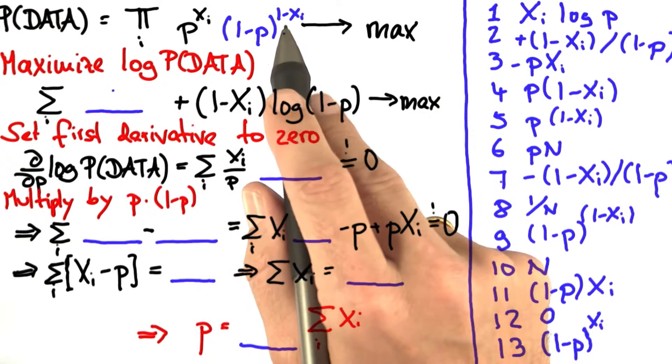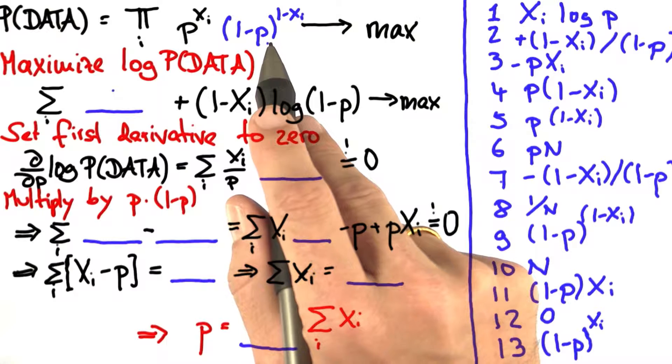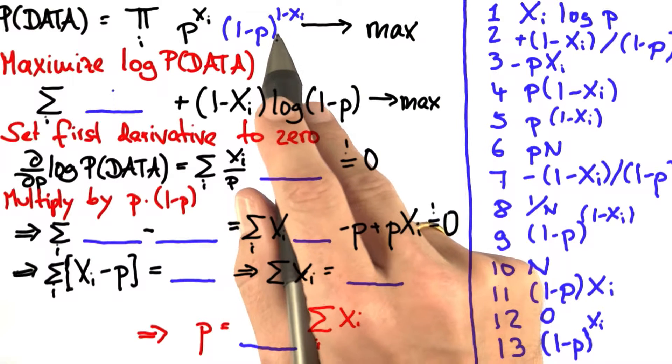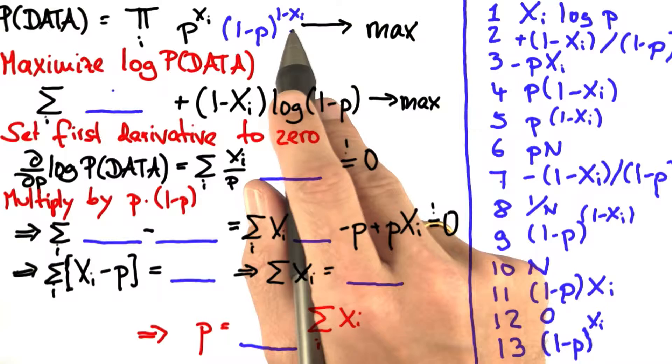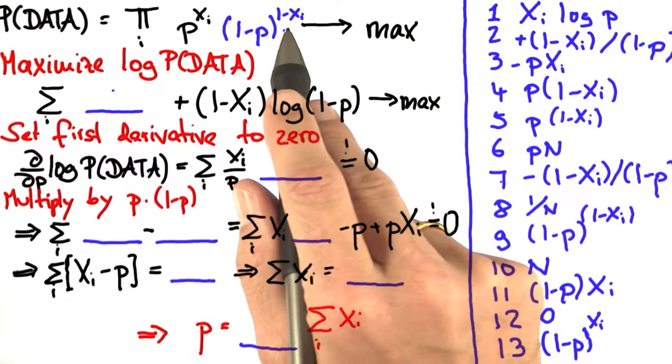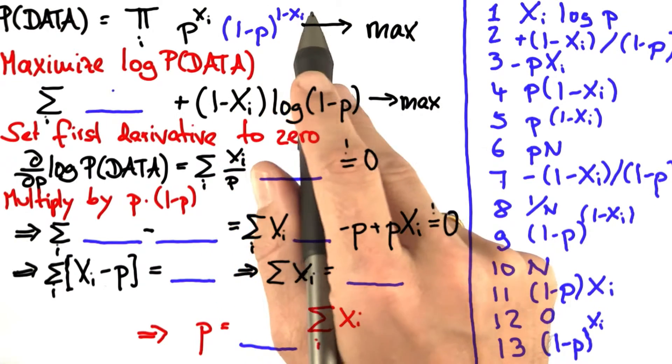This is exactly the inverse. You're going to multiply in 1 minus p for the tails probability whenever we see tails, in which case 1 minus xi will be 1. Otherwise, 1 minus xi is 0, and we just multiply in 1, which has no effect.